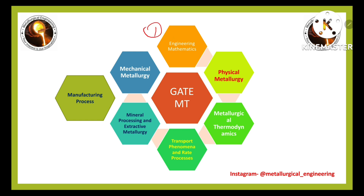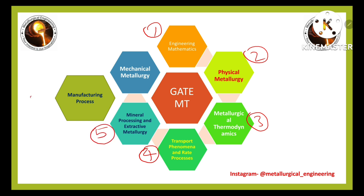The seven parts are: engineering mathematics, physical metallurgy, metallurgical thermodynamics, transport phenomena and rate processes, mineral processing and extractive metallurgy, and manufacturing processes and mechanical metallurgy.